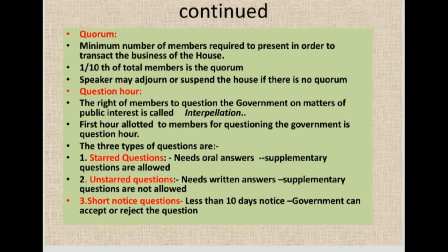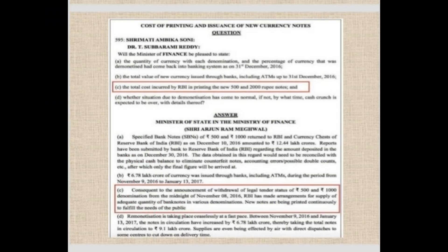Such questions are called short notice questions, and these may or may not be answered by the government — it depends on the minister to whom the question is posed. This picture is an example of an unstarred question asked by a member in Rajya Sabha and the minister replying back, based on currency notes printing when new currency was introduced. The minister gave a written reply as an example from the parliamentary process.